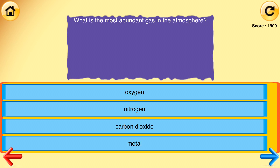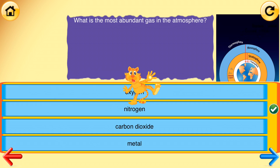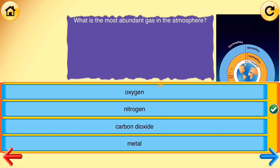What is the most abundant gas in the atmosphere? Answer choices: oxygen, oxygen, nitrogen, carbon dioxide, metal. Correct answer: nitrogen.